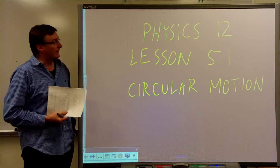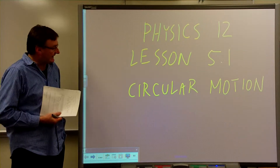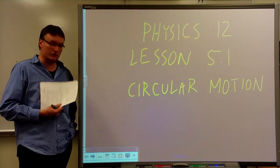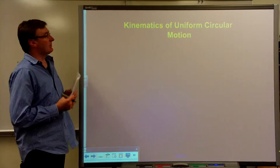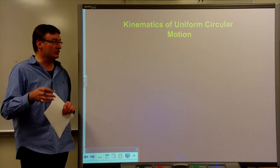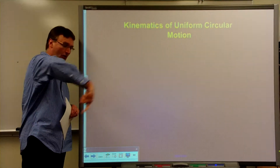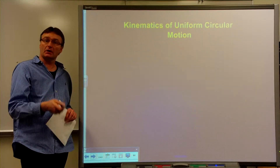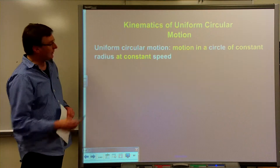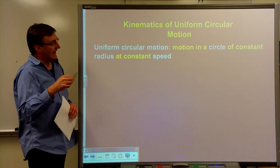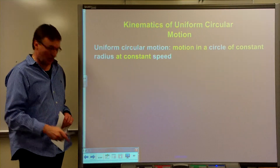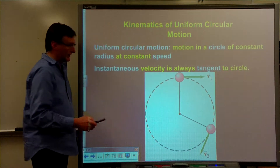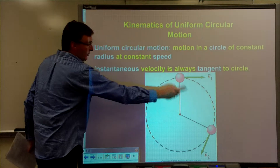Hi there sports fans. Welcome to another exciting edition of Physics 12. Today we're going to look at Lesson 5.1, which begins to look at circular motion. Specifically, we're looking at uniform circular motion, which is generally something moving in a circle in a horizontal orientation rather than a vertical one. We will look at vertical cases later, but for now we focus on uniform circular motion: motion in a circle of constant radius at constant speed, viewed from the top.